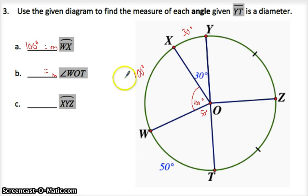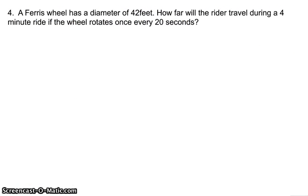Measure of angle WOT. That's 50 because it's associated with that arc. Measure of arc XYZ. Y to Z to T, since that's a diameter, this is a semicircle. This whole thing is 180. I know this whole thing adds up to 180 and they're the same, so they both have to be 90. We'll make it in 15 minutes.